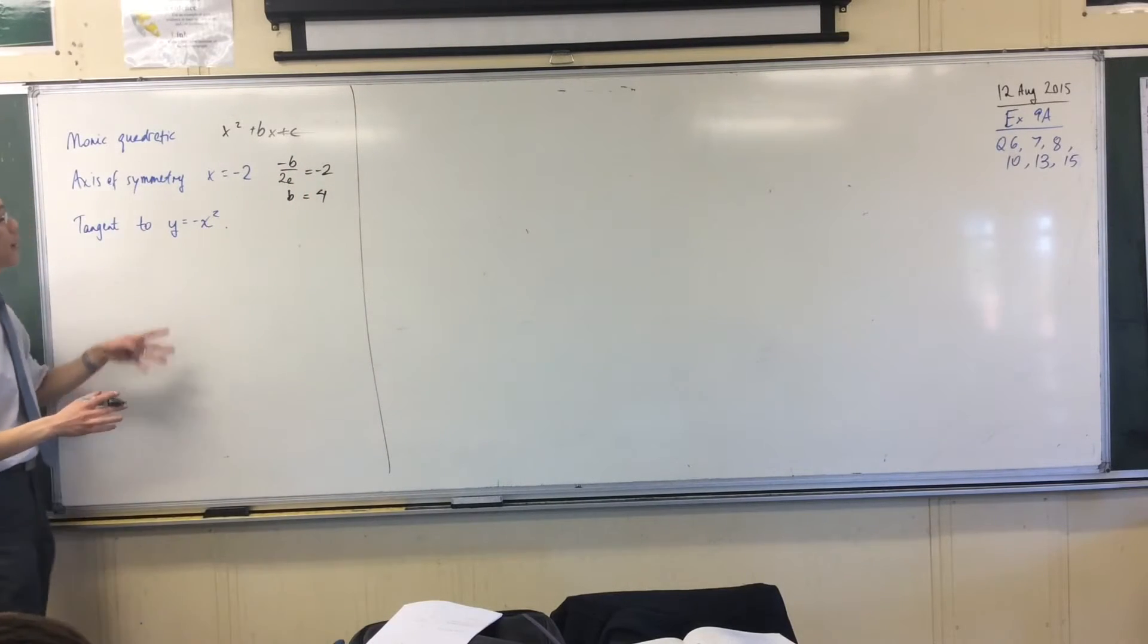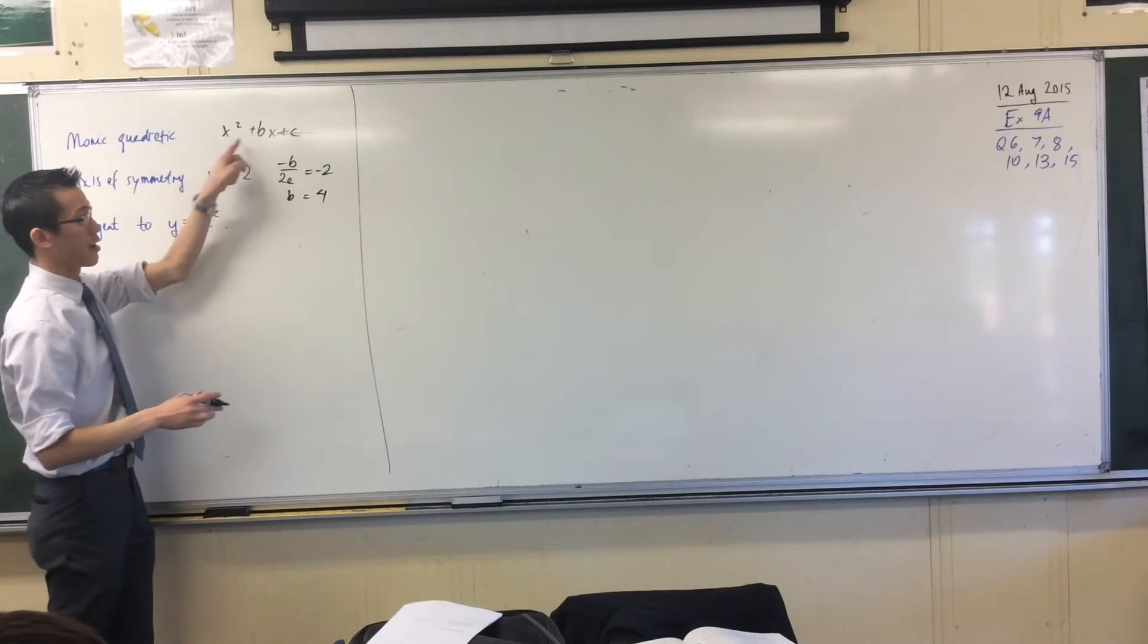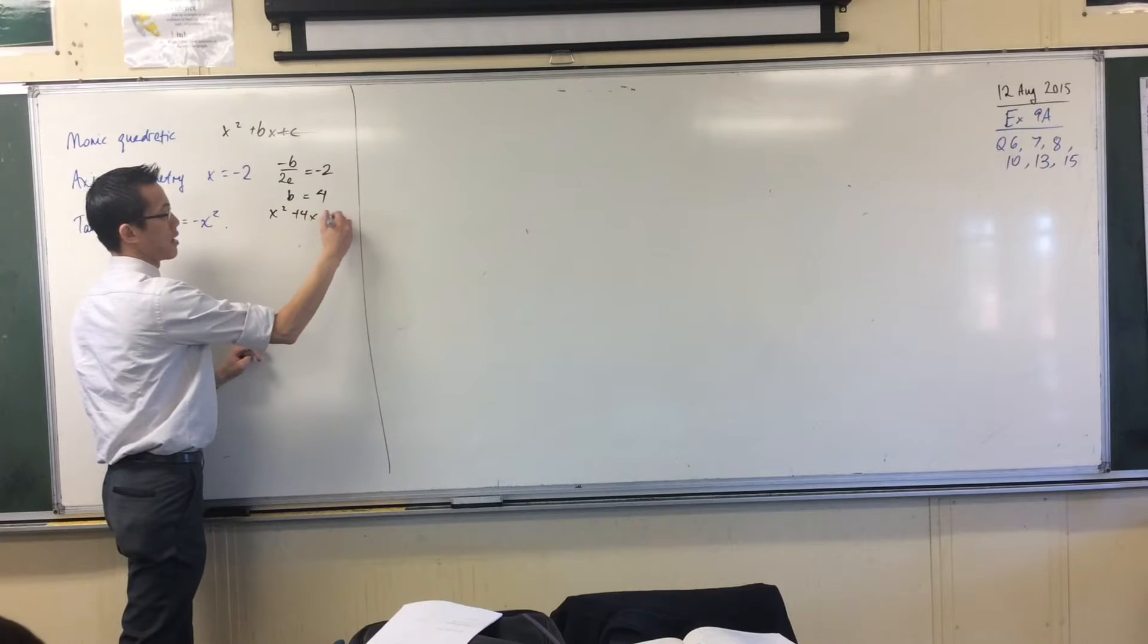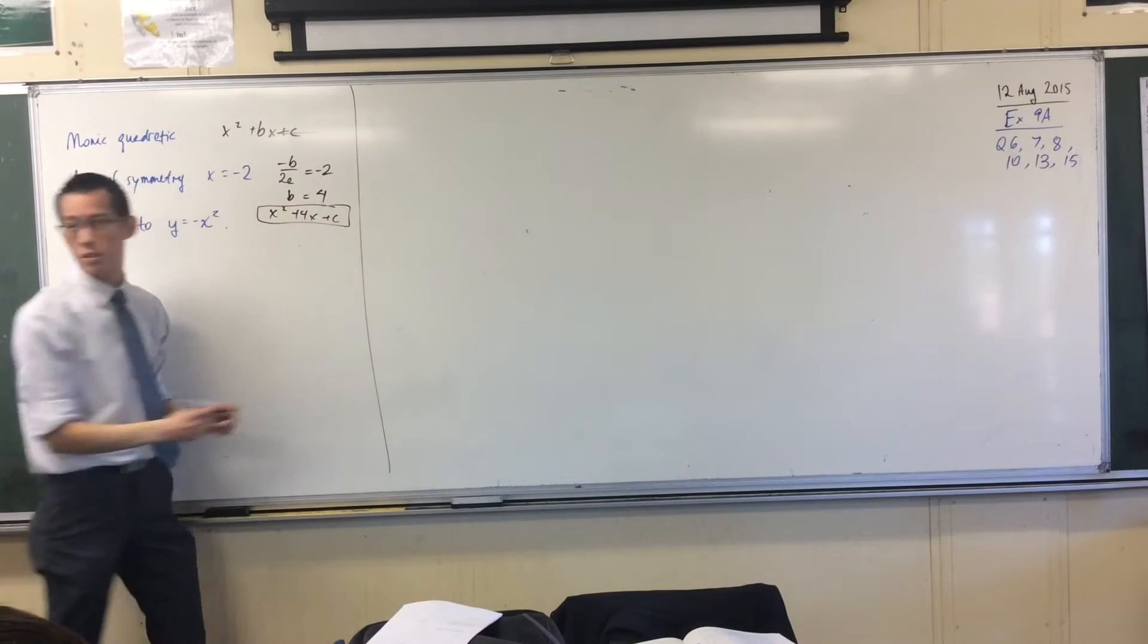So far I have x squared plus b, sorry, x squared plus 4x plus c. X squared plus 4x plus c. So this is what I've got.